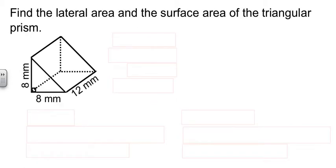So we have a triangular prism here that our job is to figure out the lateral area and the surface area for it. Well, to find the lateral area, we need the perimeter of this base, which means we need this third side.